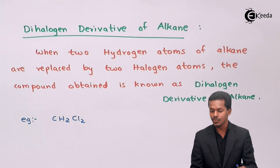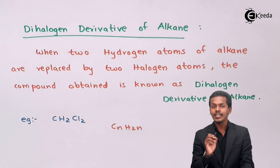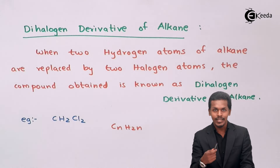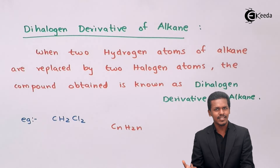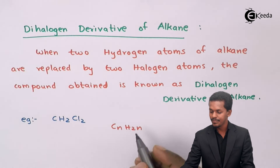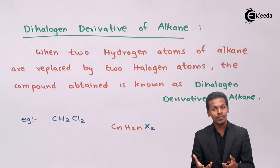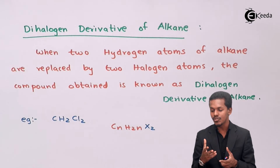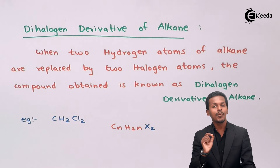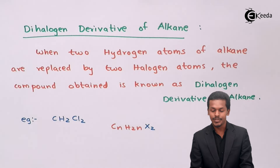The general formula for the dihalogen derivative of alkane is CₙH₂ₙX₂. Starting from the alkane formula CₙH₂ₙ₊₂, in the monohalogen derivative we had CₙH₂ₙ₊₁X. Now replacing that remaining hydrogen as well, it becomes CₙH₂ₙX₂. We can further classify dihalogen derivatives of alkane, so let us look at those.